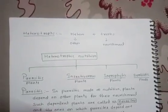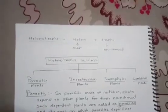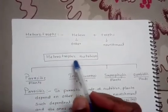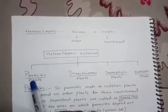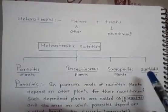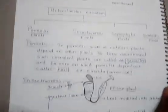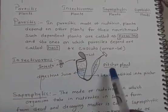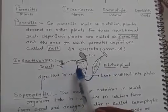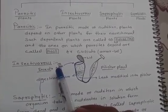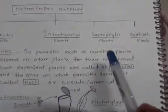Welcome children to the last session of nutrition in plants for class 7. Yesterday we discussed about heterotrophic nutrition, which is divided into four categories: parasitic plants, insectivorous plants, saprophytic plants, and symbiotic plants. In insectivorous plants, we already discussed that the pitcher plant traps insects and utilizes the nitrogen present inside the insect.